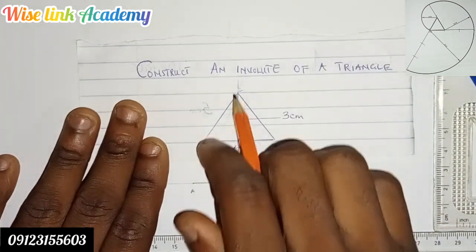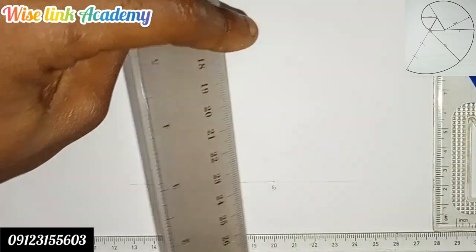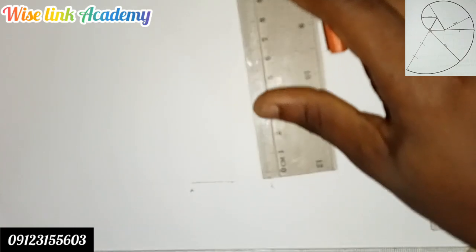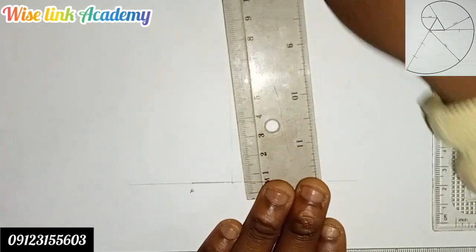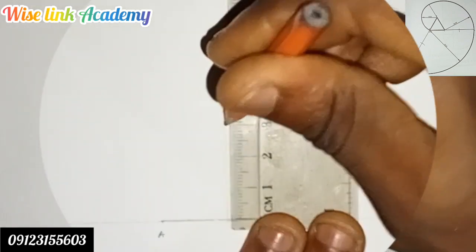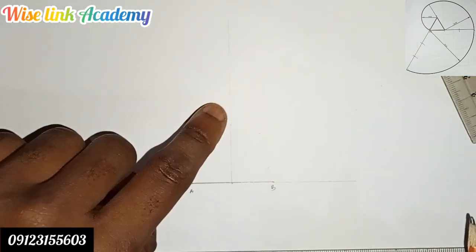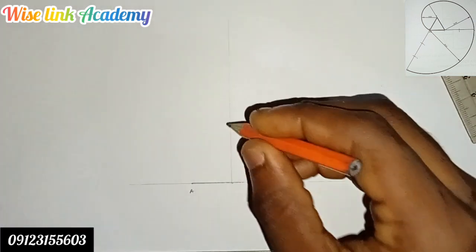From here to here is 3 centimeters. This point you are seeing here is my point C. So the next thing to do is connect that point. Connect my point A and point C.